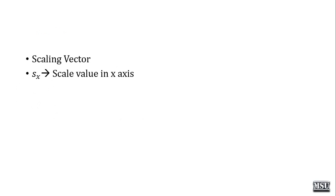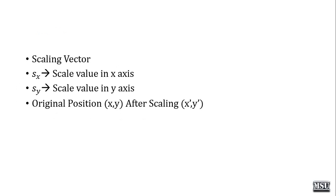The scaling vector SX equals the scale value in the X axis and SY equals the scale value in the Y axis. The initial position is X, Y. After scaling, it becomes X dash, Y dash. So X dash equals X into SX, and Y dash equals Y into SY.